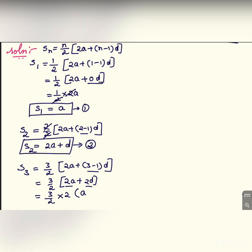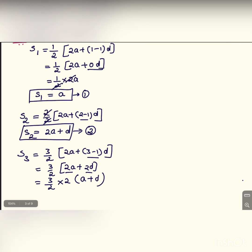We will take out common. Then we will be having a plus d in the bracket. 2 and 2 can be cancelled. We are getting 3 into a plus d. s3 is this much.